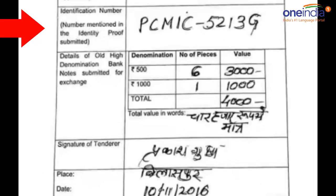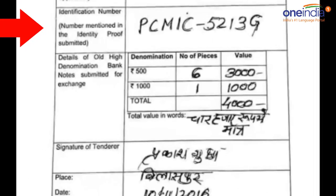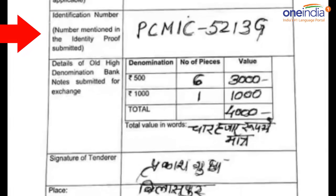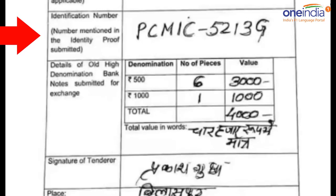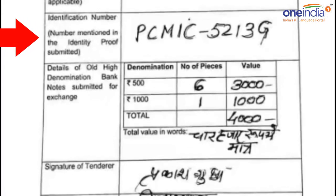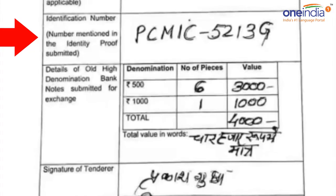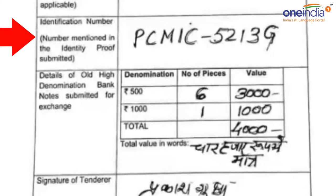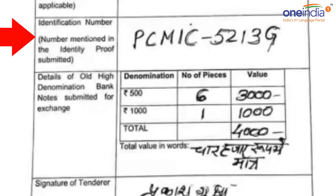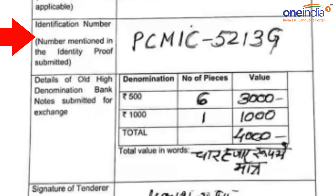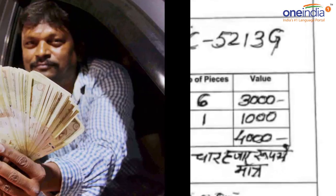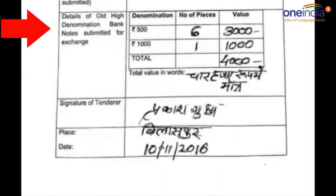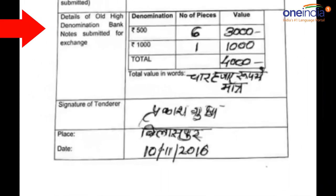The box next to that is the identification number. Every card — be it the Aadhaar card, the driver's license, the voter ID card, the passport, the NREGA card, or the PAN card — has its own unique number. You have to mention that number and write it in bold letters.